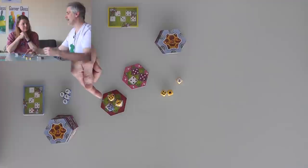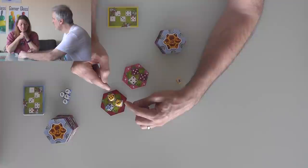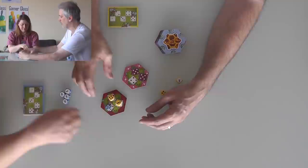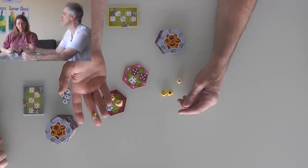When a flower gets completed, whoever has the majority claims that for themselves, and whoever is in the minority, if you didn't completely get the whole thing yourself, whoever is in the minority gets one of these little helper bees, which are basically worth half a point at the end of the game. That's all they are. It's just a consolation, half a point, bonus prize.